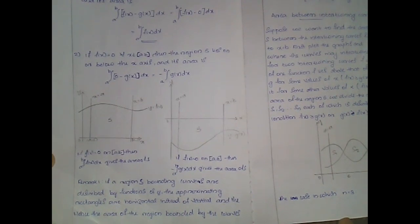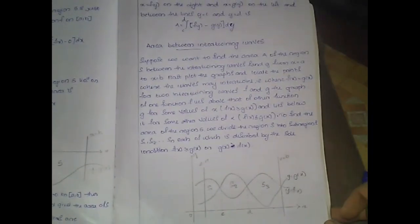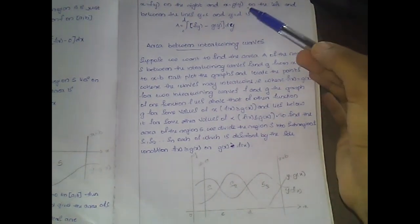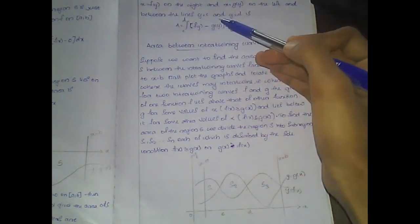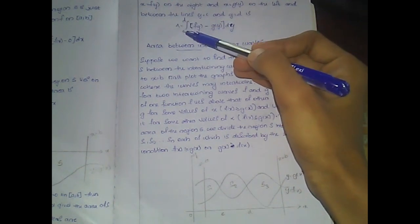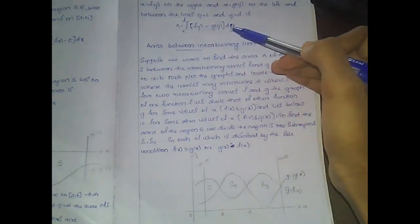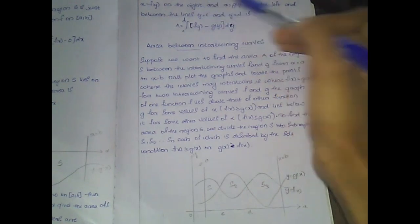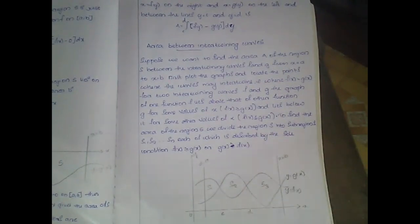The area of the region bounded by the curves x = f(y) on the right and x = g(y) on the left, between the lines y = c and y = d, is A equal to the integral from c to d of [f(y) minus g(y)] dy, where f(y) minus g(y) is greater than 0.